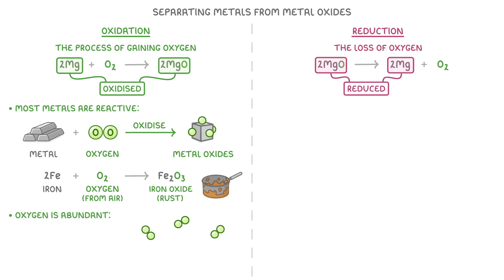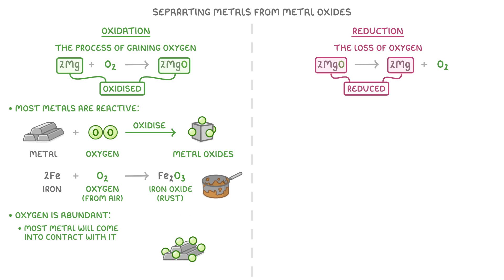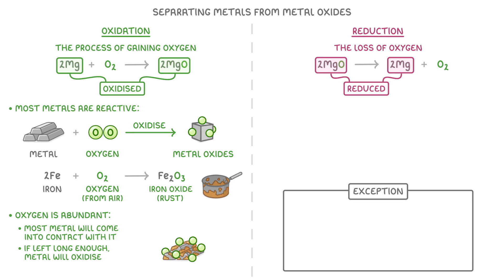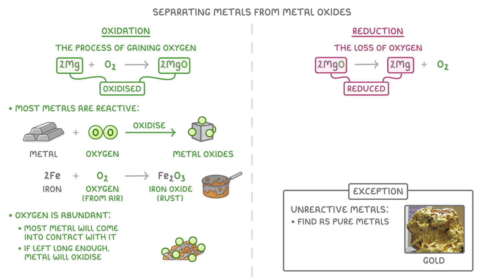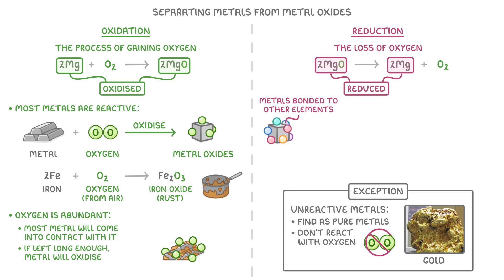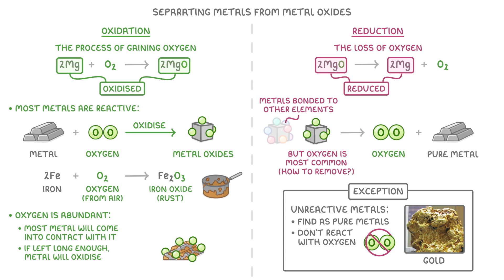And because oxygen is so abundant in our atmosphere, most of the metal on Earth will have come into contact with it at some point, and in most cases, as long as it's left long enough, the metal will have been oxidised. The exception to this rule is the really unreactive metals like gold, which we often find as pure metals because they're too unreactive to react with oxygen. Remember that we do find metals bonded to other elements as well, but being bonded to oxygen is the most common, and you need to know how we can remove this oxygen to get a pure metal.